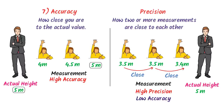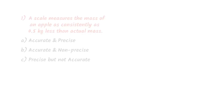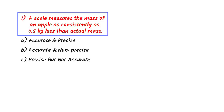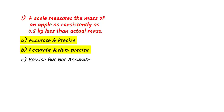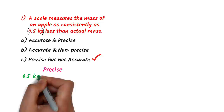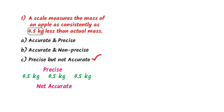Remember: high precision but low accuracy. Now an important MCQ: a scale measures the mass of an apple constantly as 0.5 kg less than the actual mass. Options: A) accurate and precise, B) accurate and non-precise, C) precise but not accurate. The correct answer is C — it is precise because the scale constantly measures 0.5 kg less, but it is not accurate because the result differs from the actual mass.